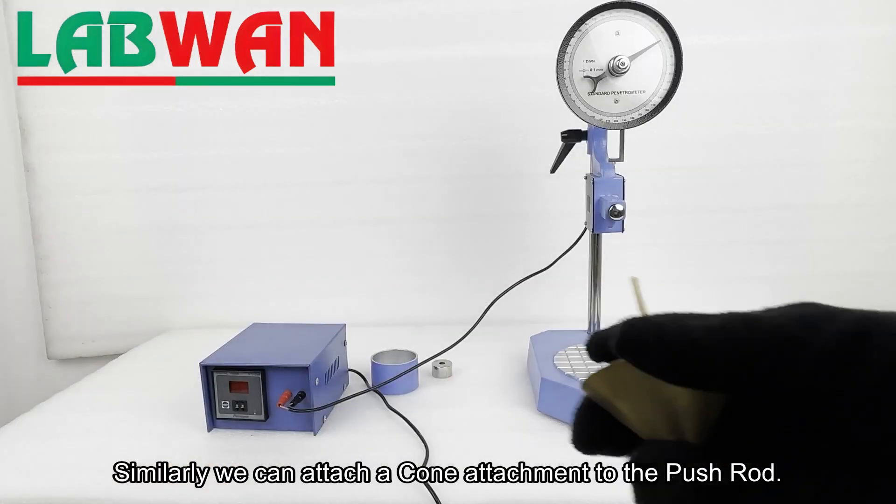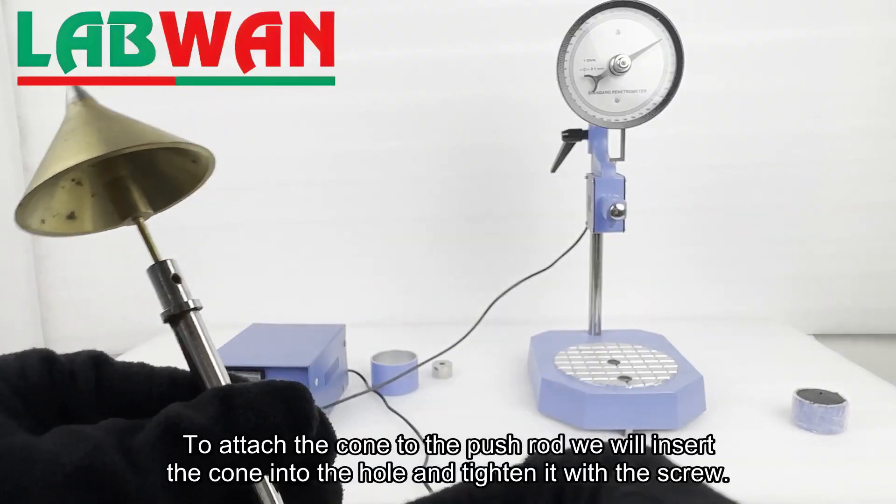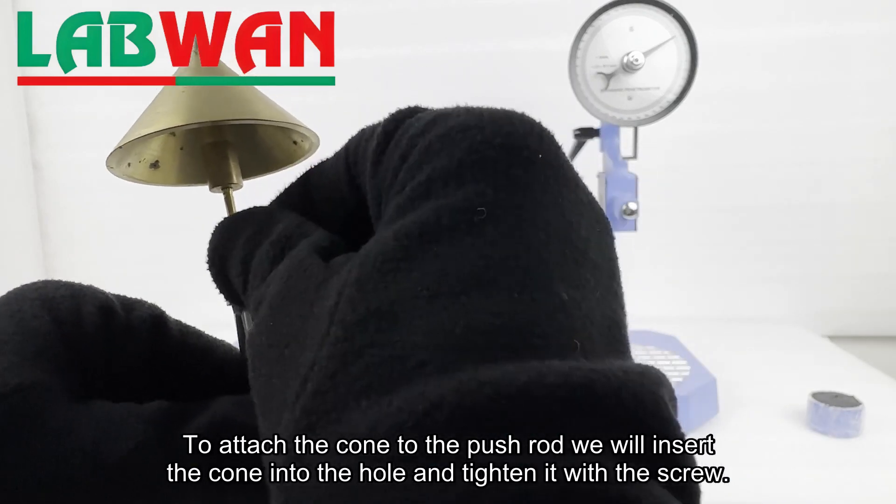Similarly, we can attach a cone attachment to the push rod. To attach the cone to the push rod, we will insert the cone into the hole and tighten it with the screw.